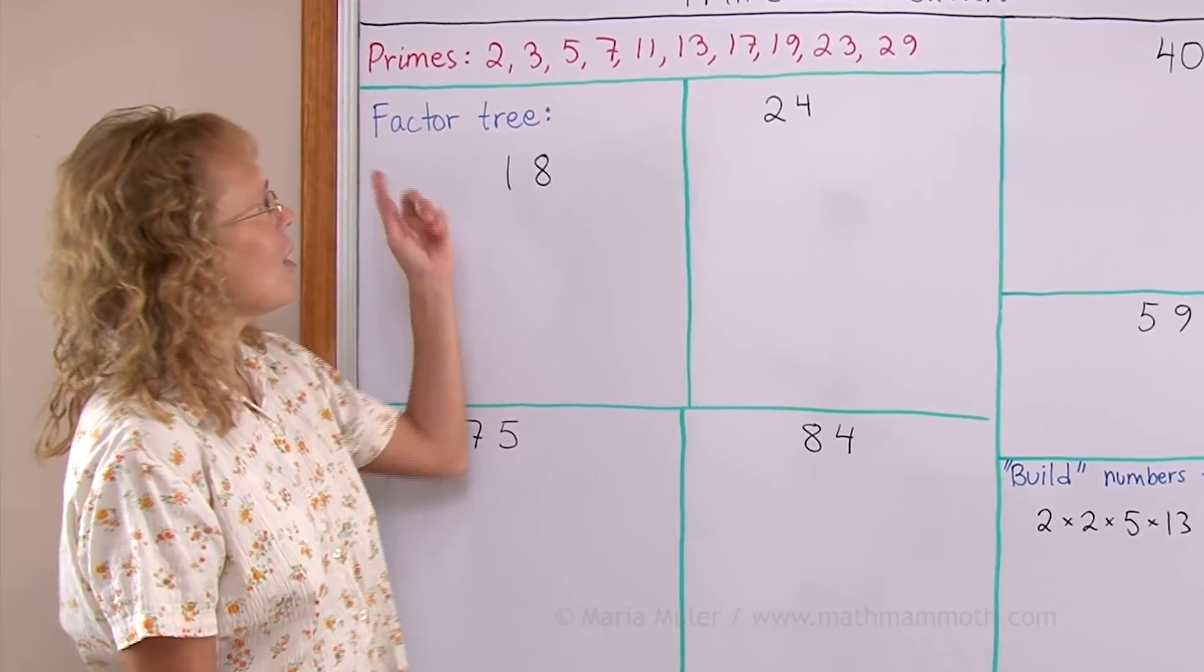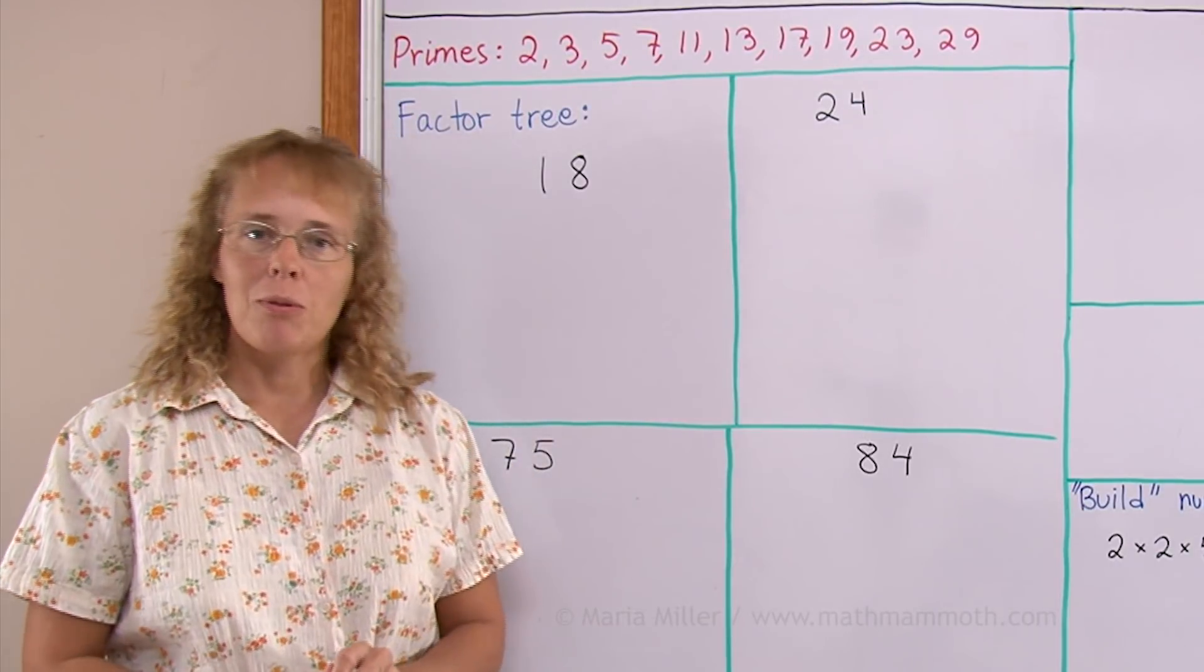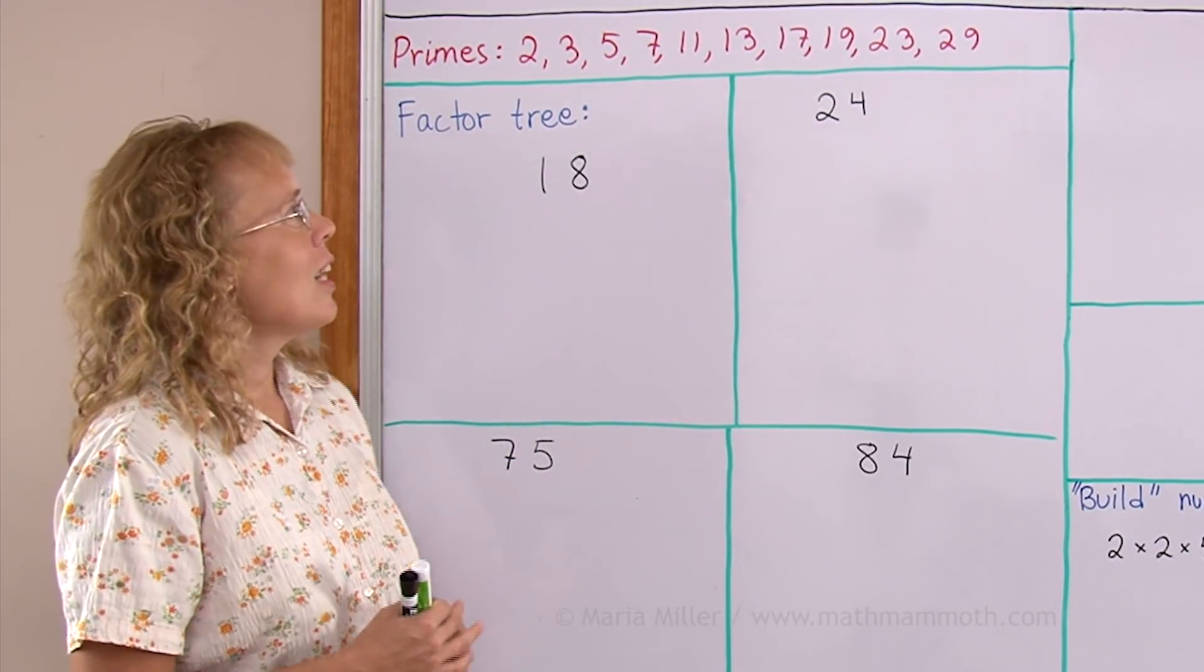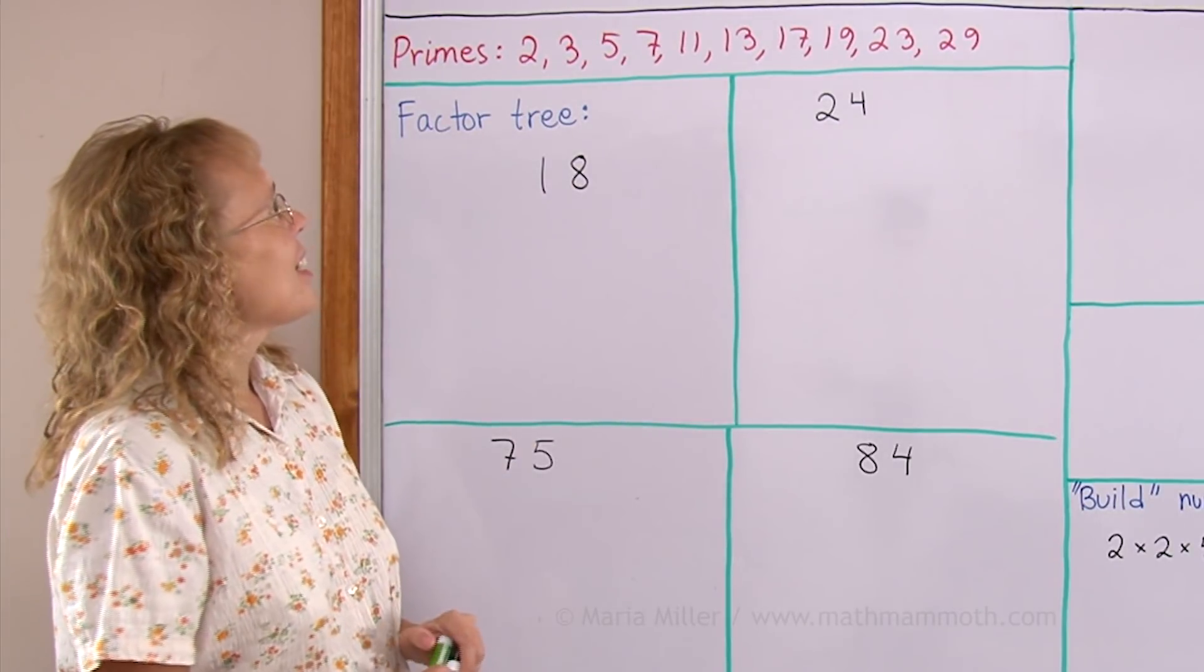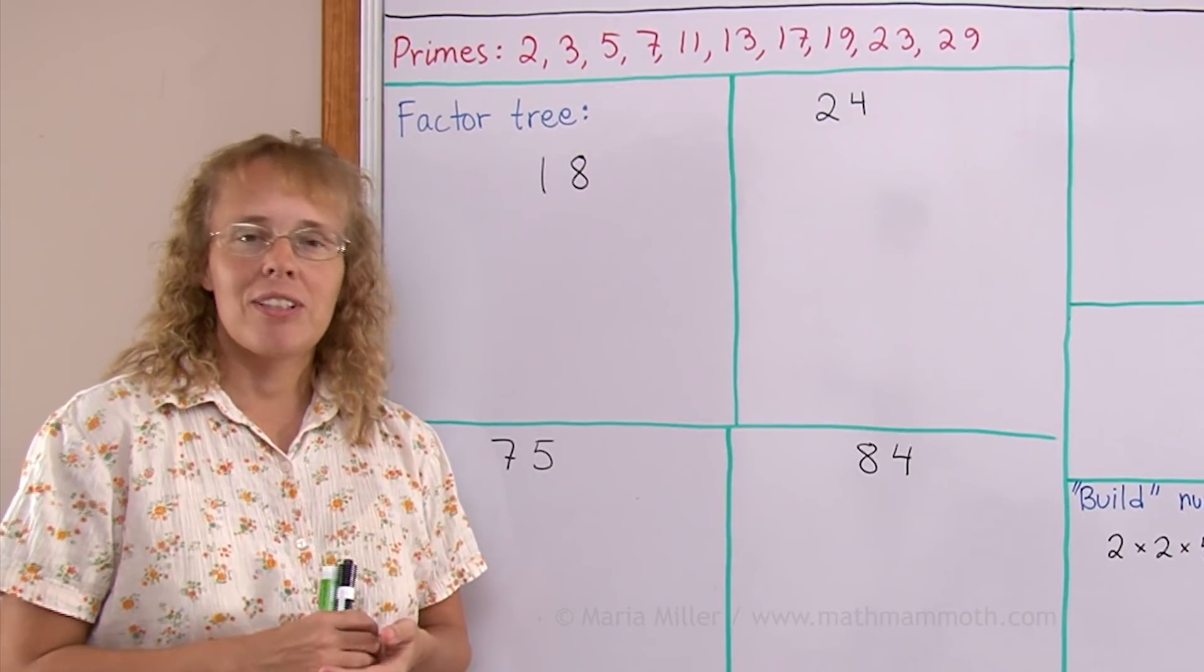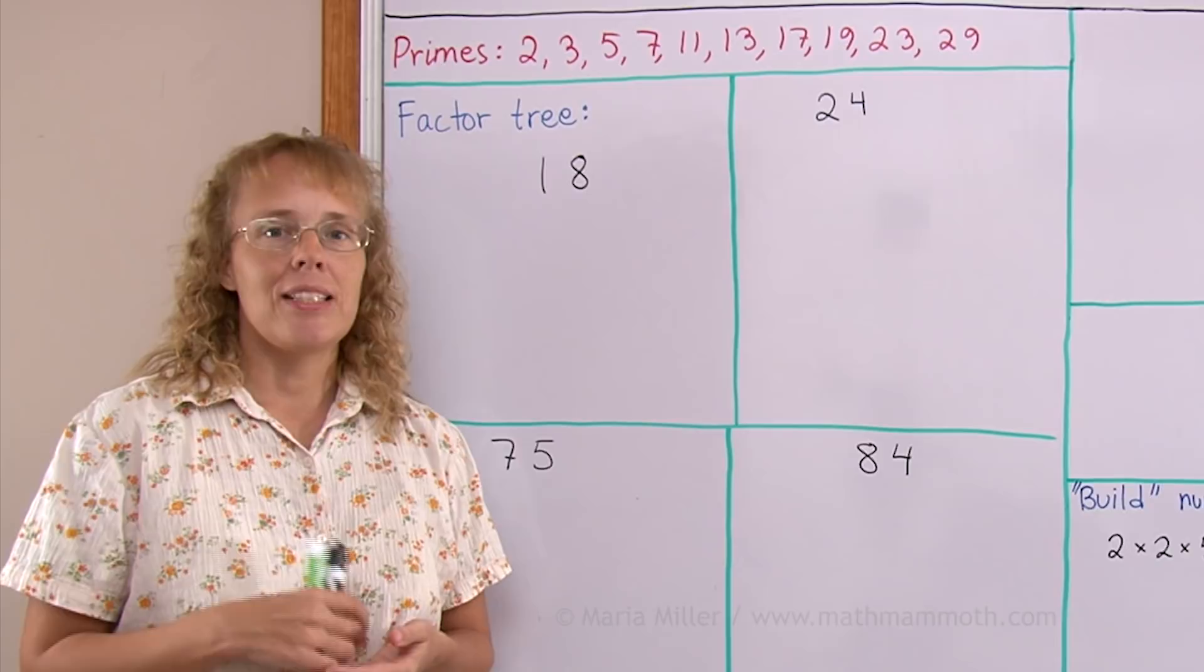I wrote here a list of some primes up to 30. You probably want to keep these in mind, and as you work with prime factorization you'll start memorizing those. Remember, a number is prime if it isn't divisible by anything else except by one and by itself.